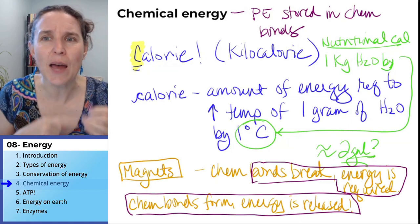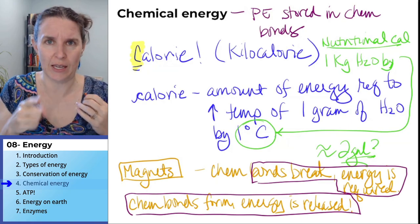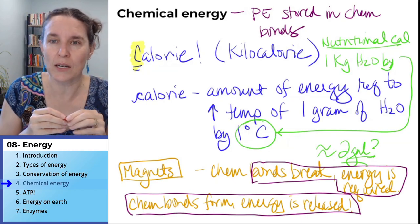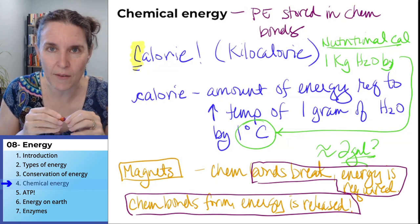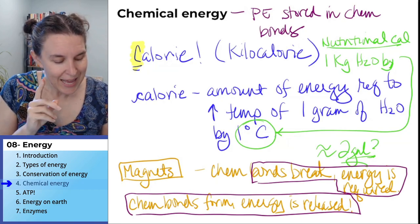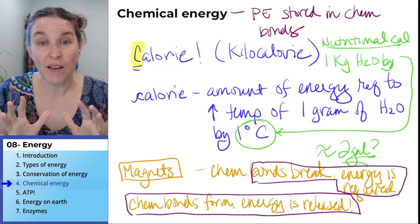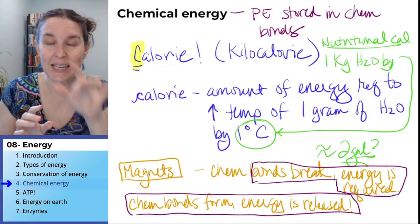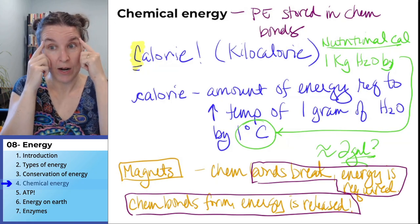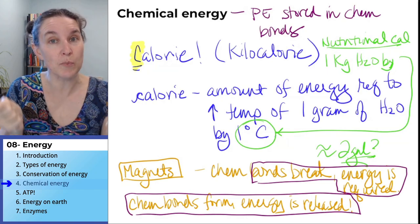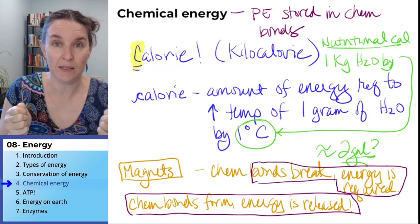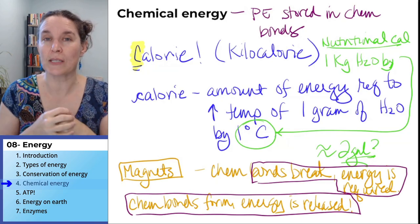Like a water wheel captures the energy of water moving and uses it to run a washing machine or whatever, same thing with chemical energy. I can't visualize any of this unless I accept that they're like magnets. I memorize that when chemical bonds break, I have to put energy in, and when they form, energy is released.